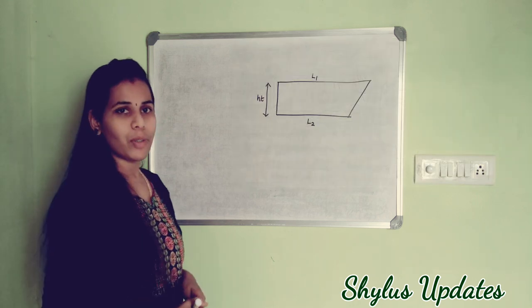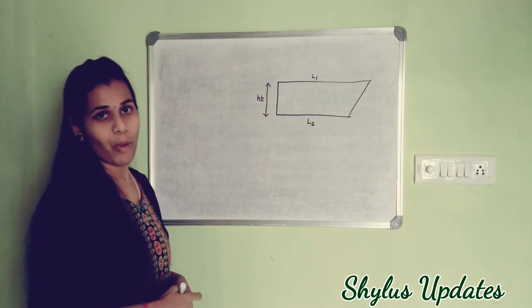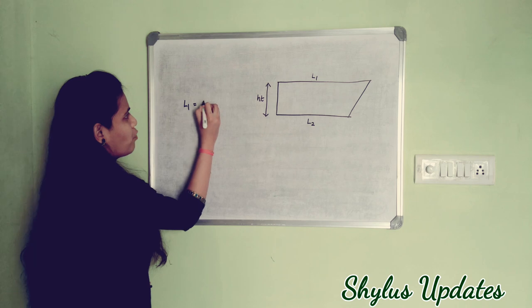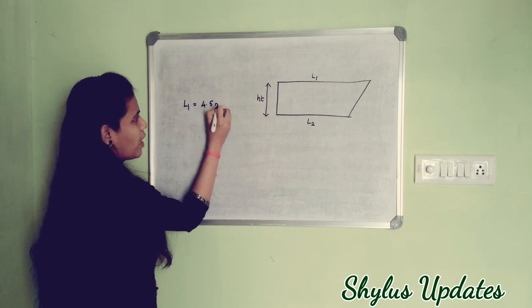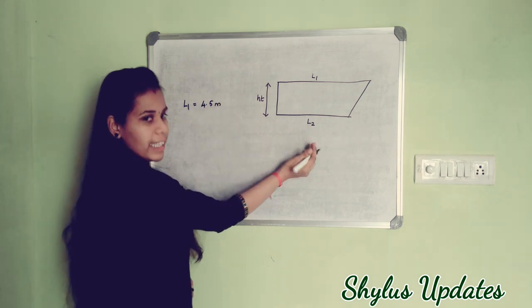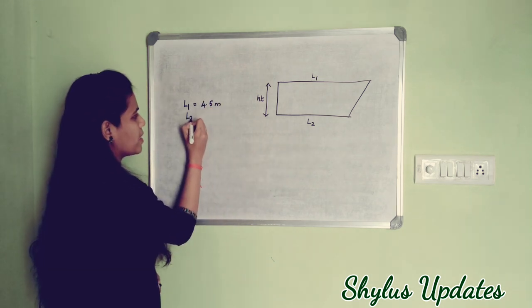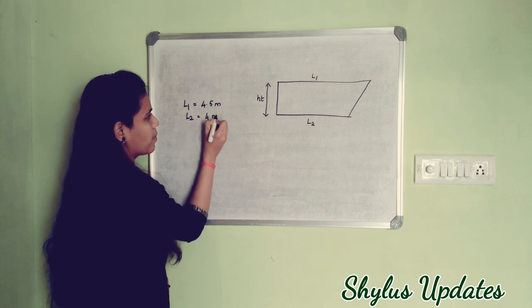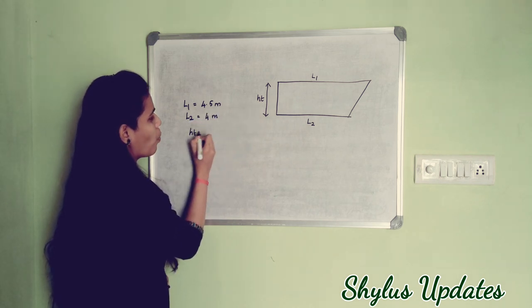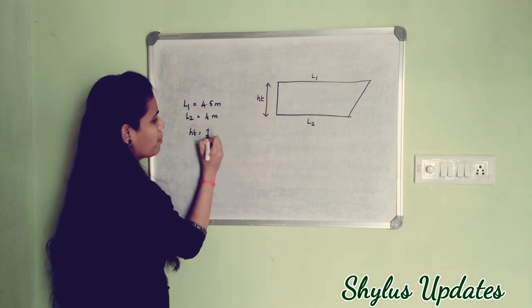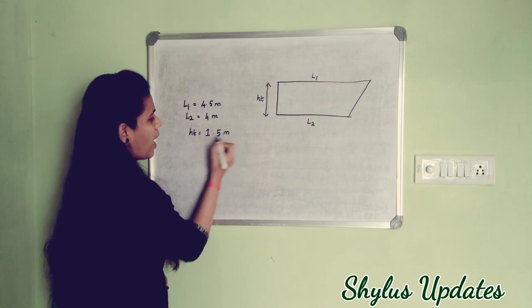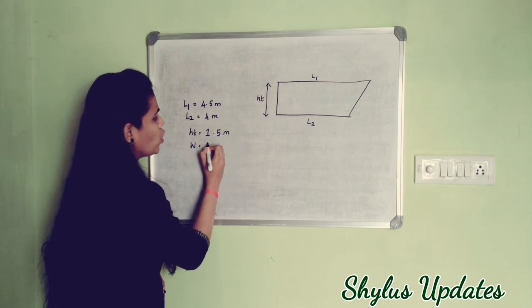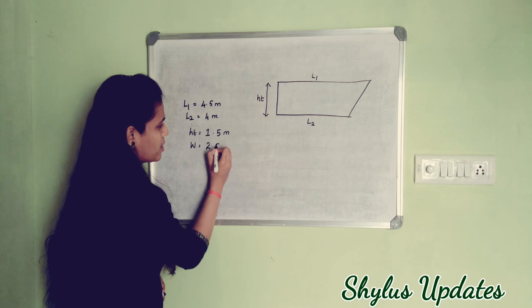Here, I am going to take the length L1 as 4.5 meters, length L2 as 4 meters, height as 1.5 meters, and width as 2.5 meters.